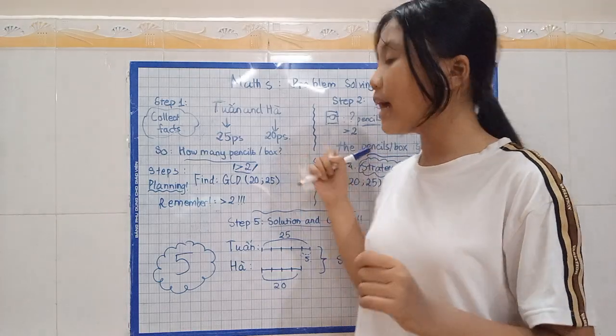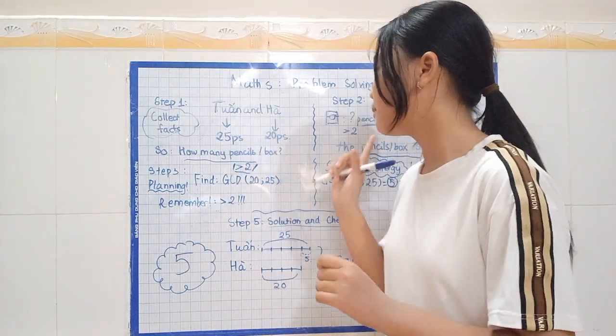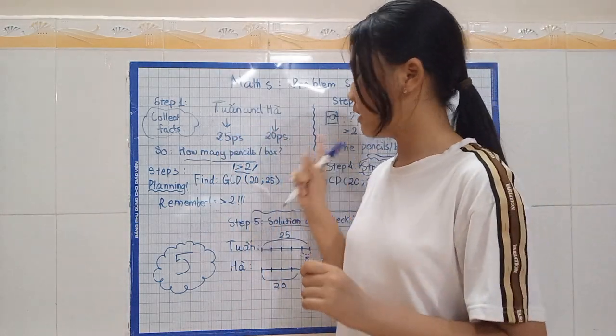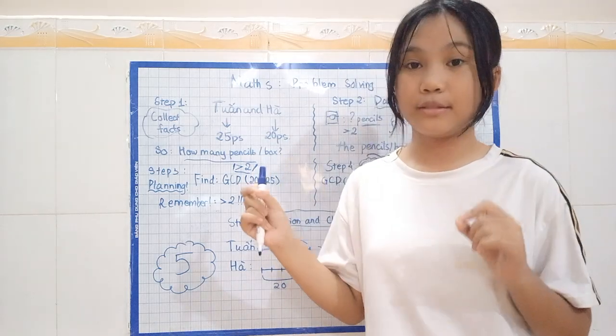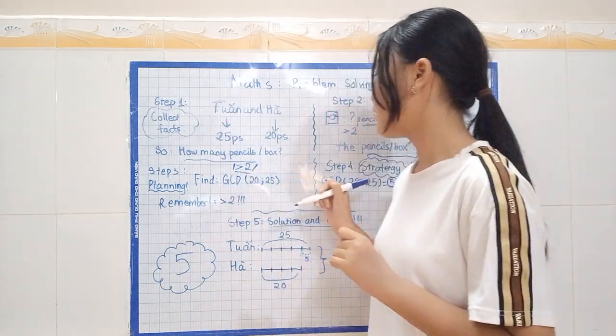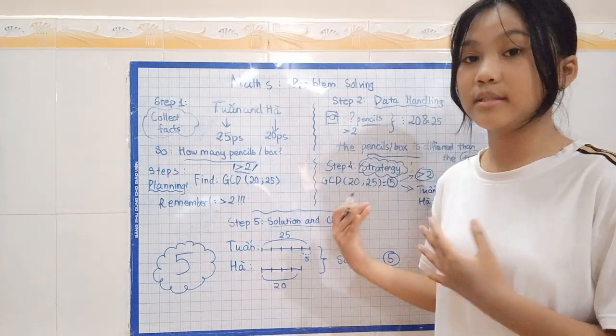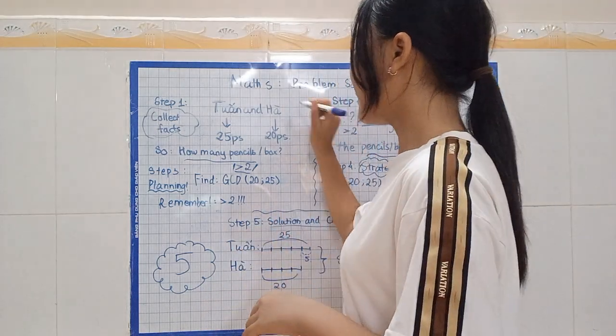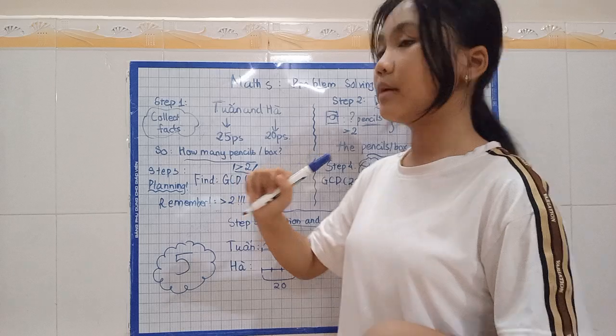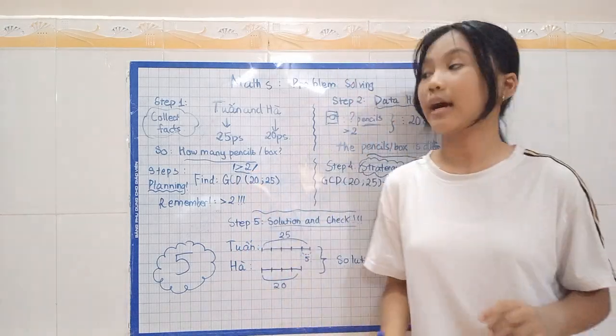They're asking how many pencils are there in a box, and in this case, the amount of pencils is more than two, which is a really important thing that we need to remember. It is more than two. And every box has the same amount of pencils. We have just one amount of pencils in a box, and it wouldn't be changing. It would be still the same in different boxes.